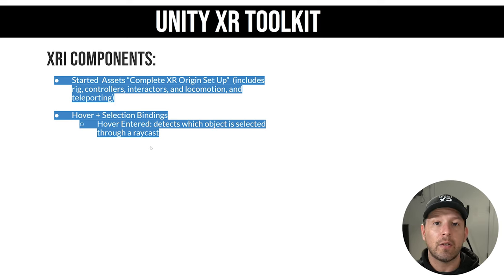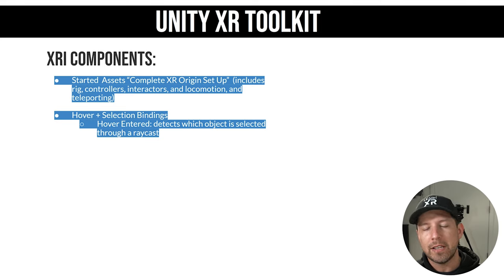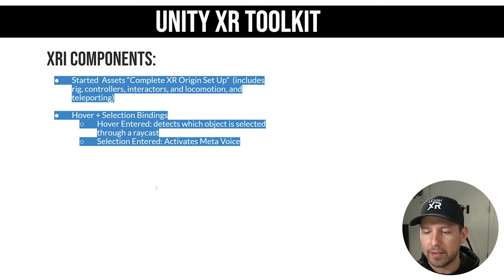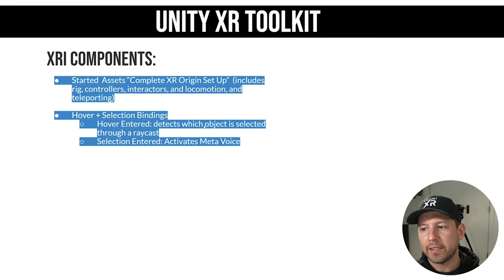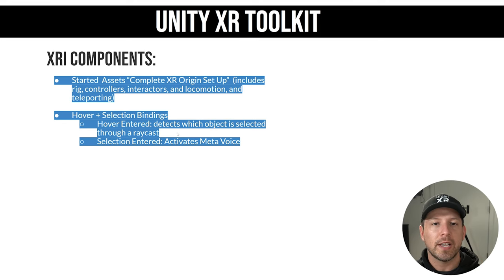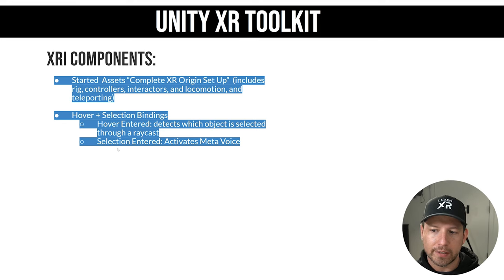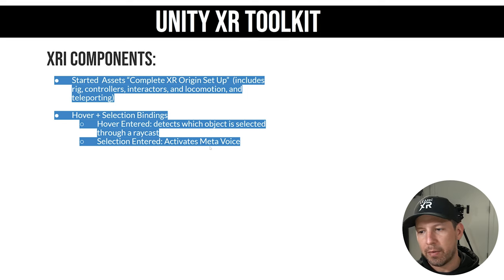For instance, on the ground I needed to make sure the tiling value on the material was high enough to make things tile correctly. I have different options for hover selection because this is detecting the object that is selected — I keep that in memory. Then once I have it in memory, I know that when I say something with my voice, I know which object I'm going to be applying that prompt to. On the selection enter, I basically just activate the Meta Voice, and that's by pressing the trigger button on the controller.